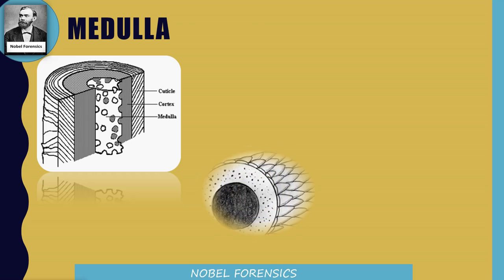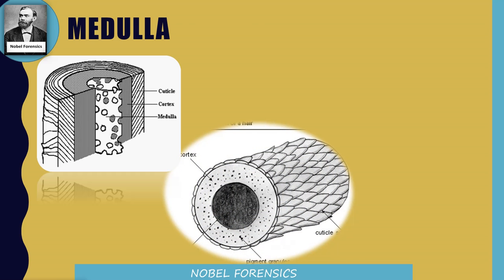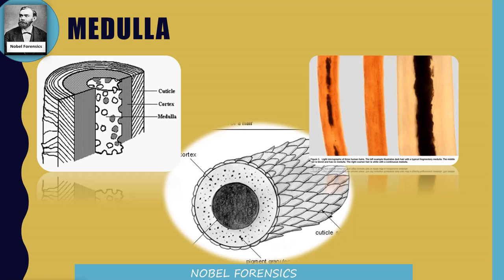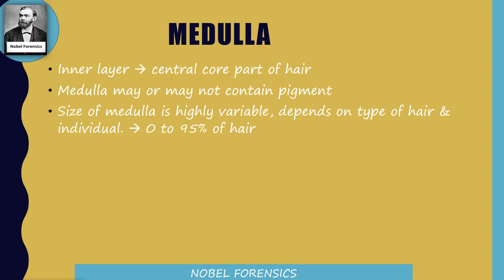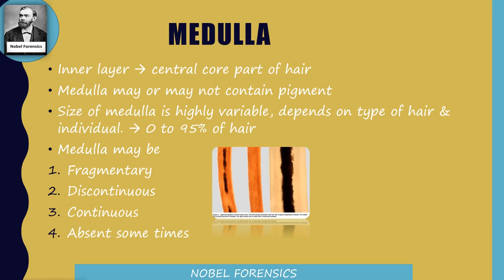Coming to the medulla — the medulla is the inner, central core part of hair. Medulla is different in animals and humans. Usually in animals there is a broad medulla, but in humans it can be fragmentary, continuous, discontinuous, or sometimes even absent. Medulla may or may not contain pigment. Size of medulla is highly variable, depending on type of hair and the individual. Usually 0 to 95% of the hair will contain medulla.